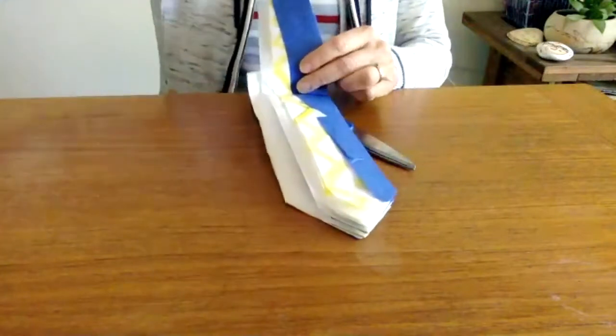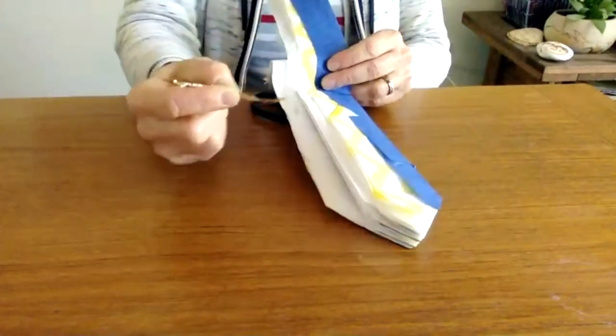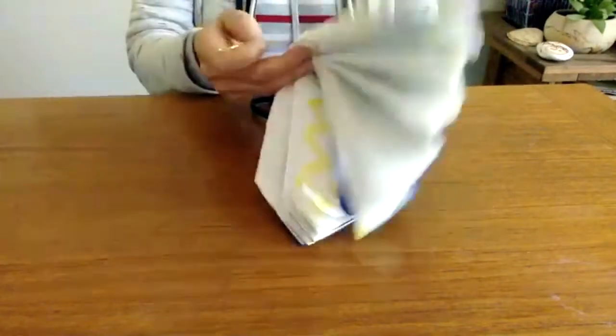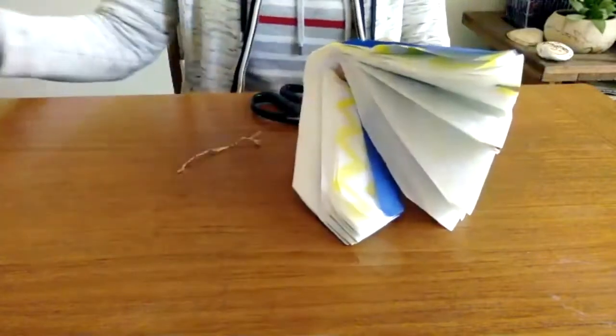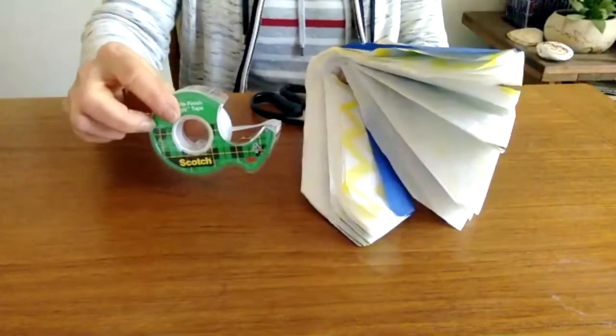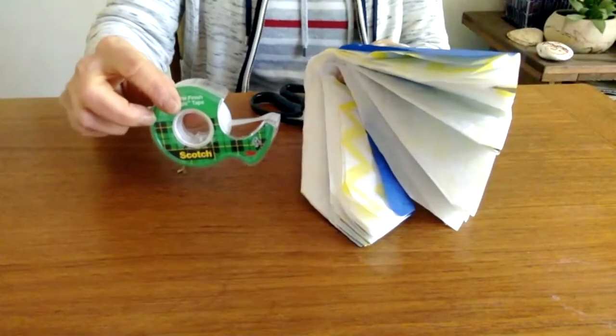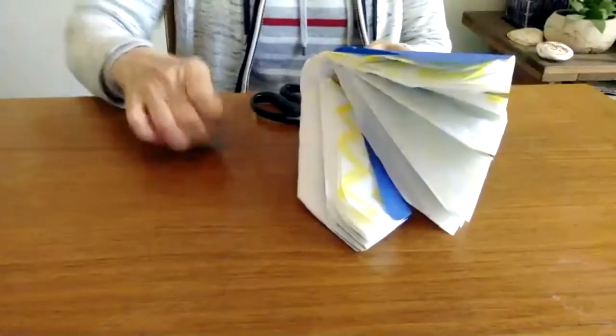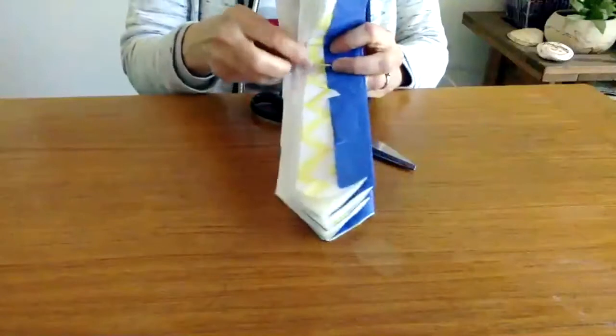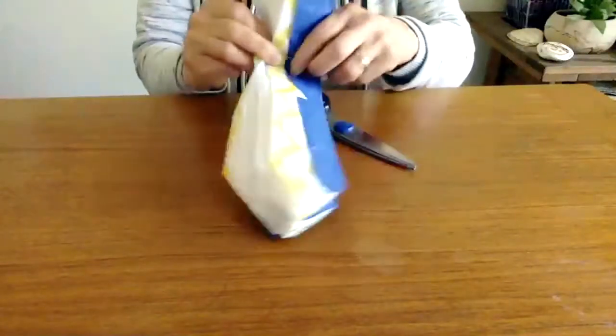So now I'm going to take my twisty tie and I'm going to tie it around the fold. I could take the tape and tape it around the fold. If you don't have a twisty tie, you can use tape. So here I go. I'm putting the twisty tie in there. It's a little wide. That's okay.